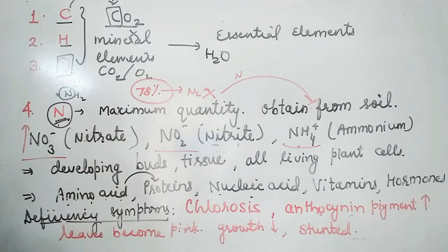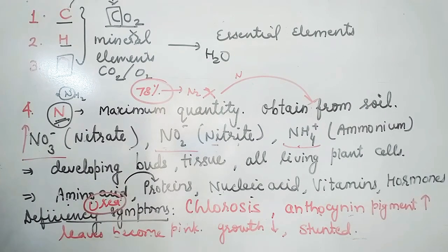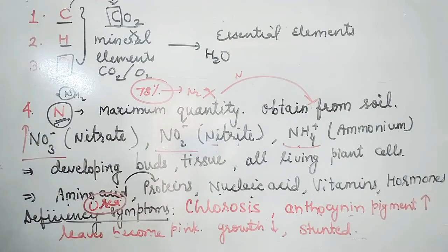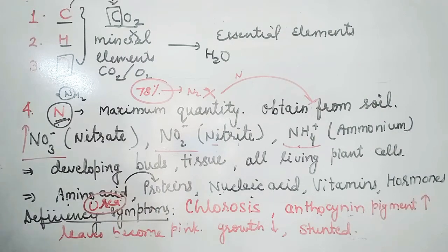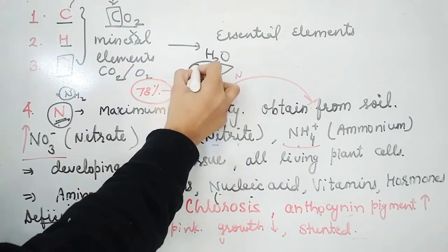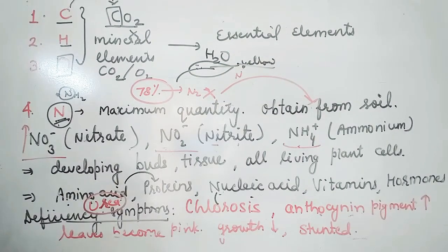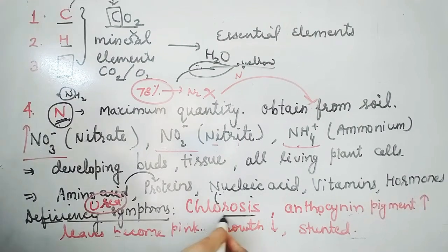If there is a deficiency of nitrogen, it can be supplemented by applying urea, which is a main nitrogen-containing compound. The first and main symptom of nitrogen deficiency is chlorosis — meaning loss of green color. The leaves turn yellow due to breakdown and decomposition of chlorophyll.